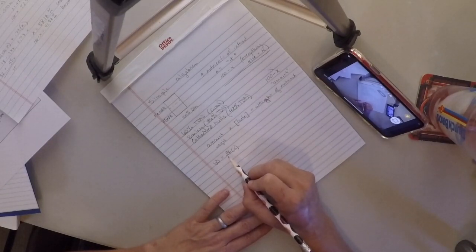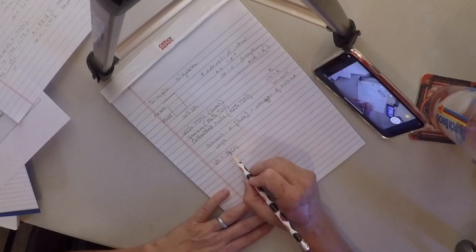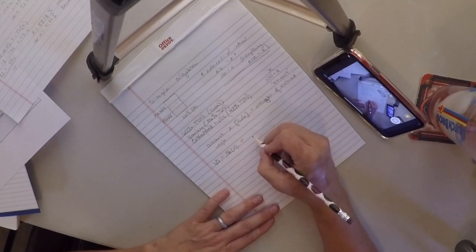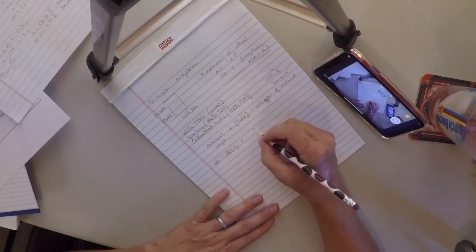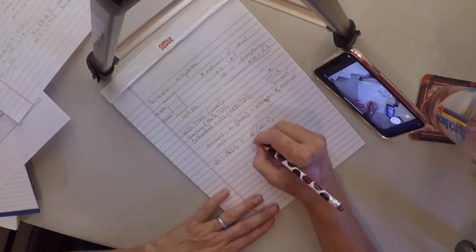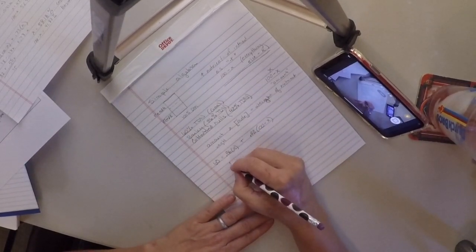that's going to give us the amount of TDN coming from barley and we're going to add that to the second feed which is going to be 100 minus x times the concentration of 0.42.